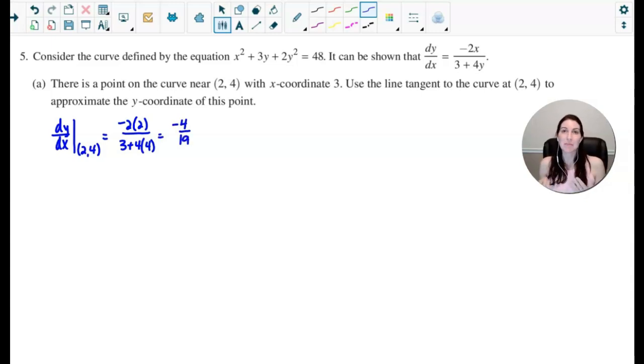So I would plug in 2 for the x, and then I would plug in 4 for the y, and you can see that this would give us negative 4 over 19. Now I can go ahead and write this point-slope form equation of my line because I have the point and I have the slope. So it would be y minus the y-coordinate equals the slope times x minus the x-coordinate. And I usually like to solve this for y. So it's negative 4 over 19 times x minus 2 and then plus 4. So there is my equation, the tangent line.